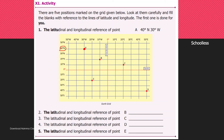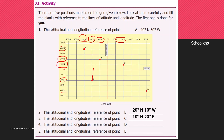To find coordinates: first identify latitude (north or south), then longitude (east or west). Point A: 40 degrees north and 30 degrees west. Point B: 20 degrees north and 10 degrees west. Point C: 10 degrees north and 20 degrees east. Point D: 40 degrees south and 50 degrees east. Point E: 20 degrees south and 20 degrees west.